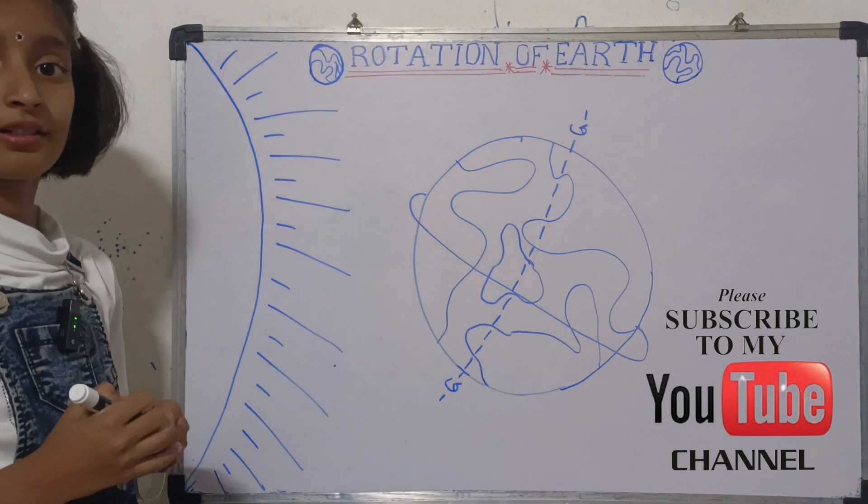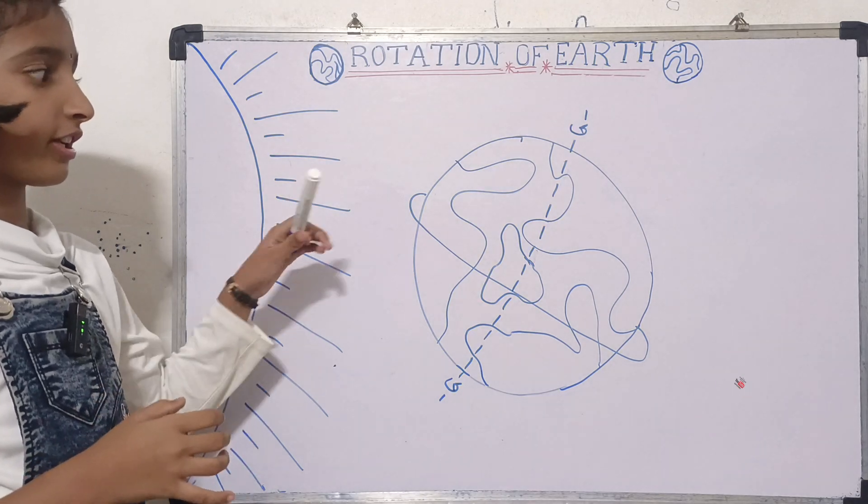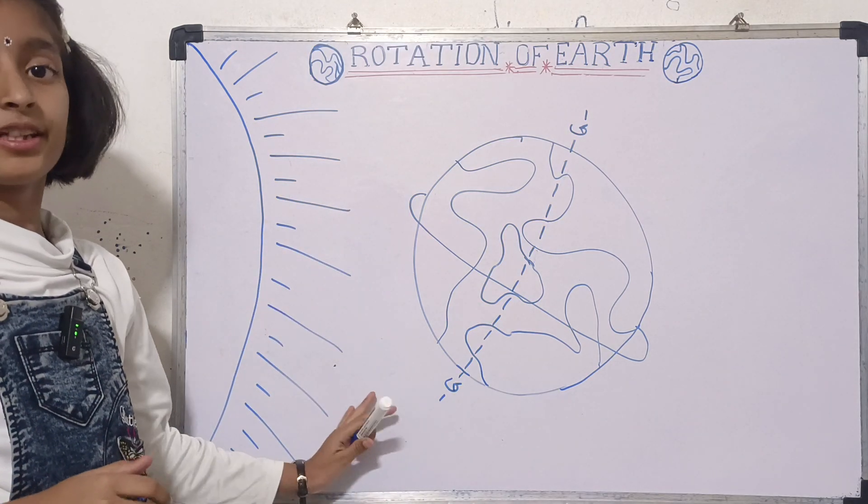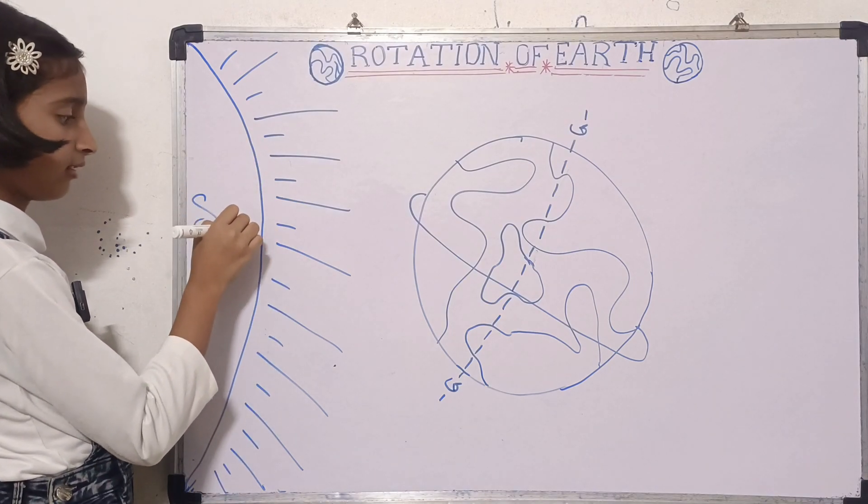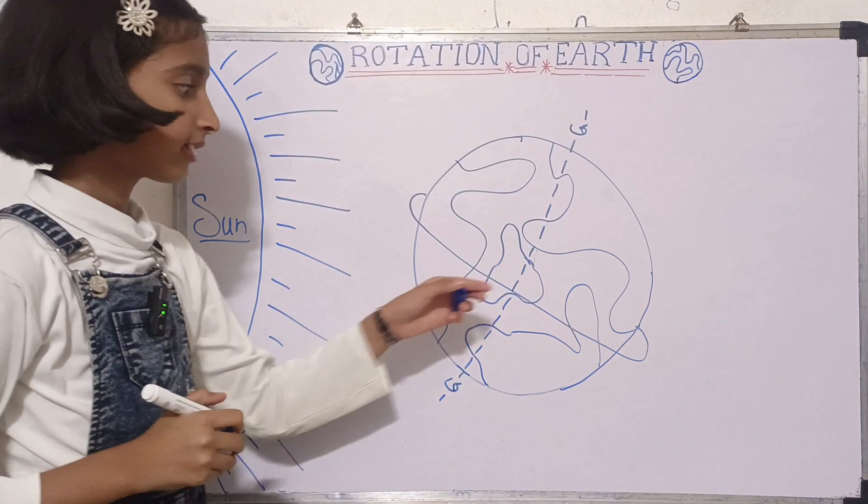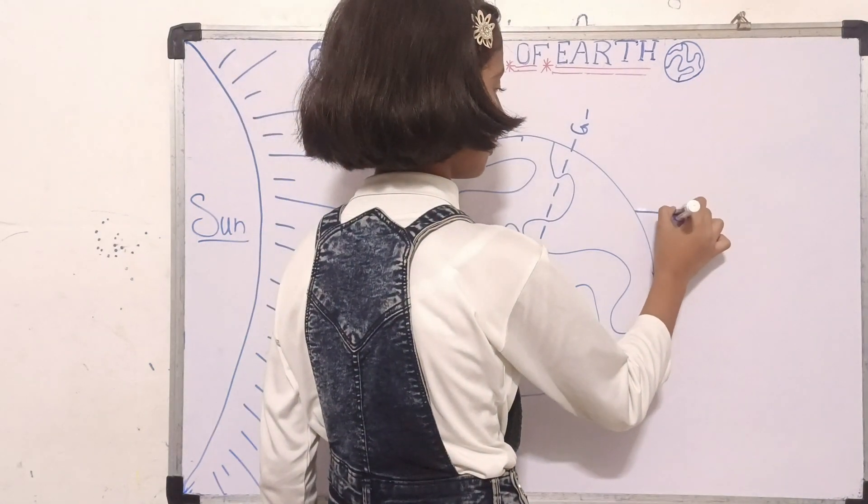So I have finished drawing the diagram of rotation. Now I will explain all about it. This is our Sun, and this is our Earth.